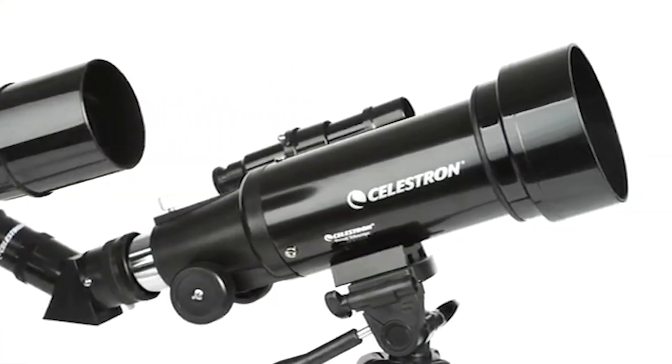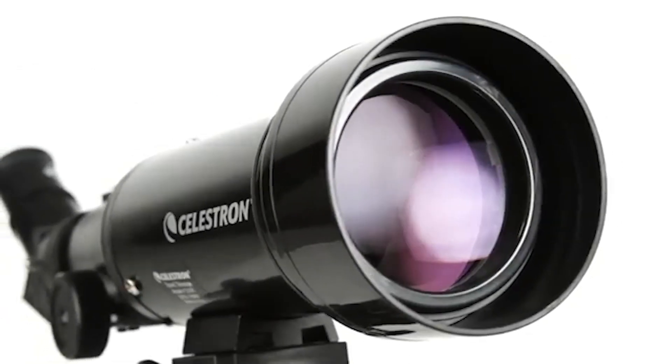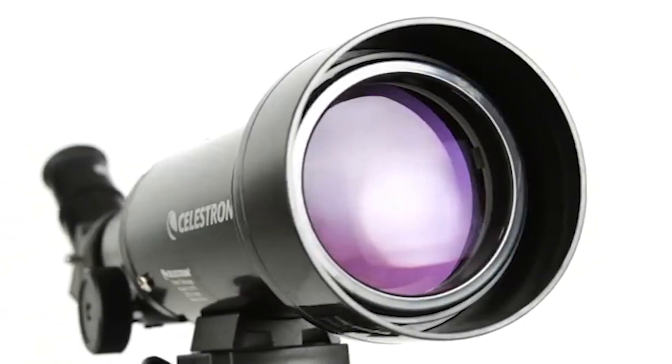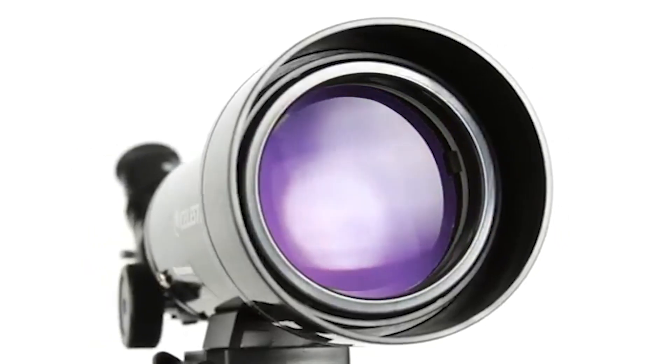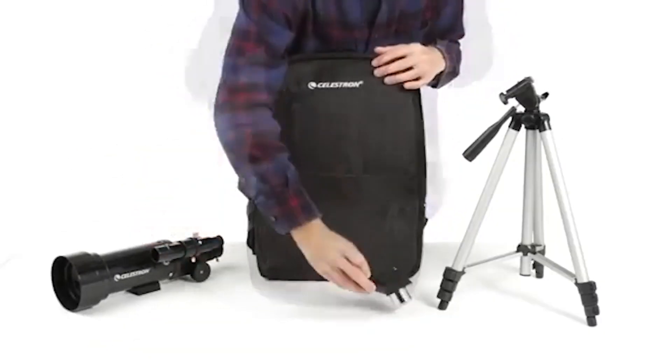Luckily, Celestron has a light and portable telescope called the Travelscope 70, which is lightweight, mobile, and even comes with its own backpack, making it perfect for traveling, hiking, or any other kind of outdoorsy adventure.